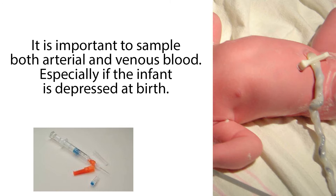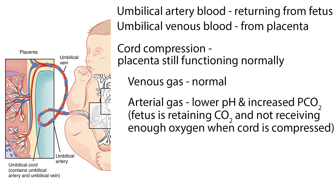It is important to sample both arterial and venous blood, especially if the infant is depressed at birth. Blood from the umbilical artery represents the state of the fetus at the time of delivery, because it is blood returning from the fetus. Umbilical venous blood provides the placental status.